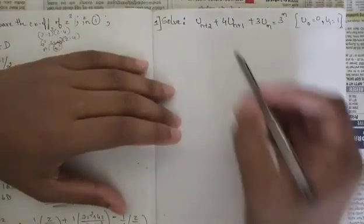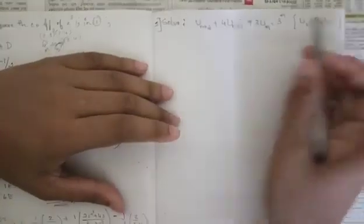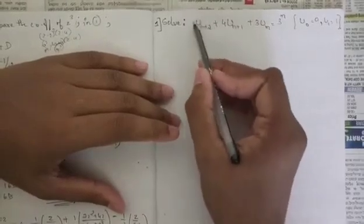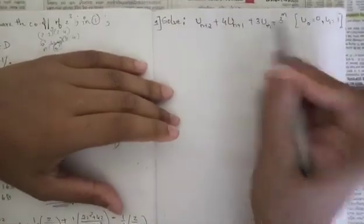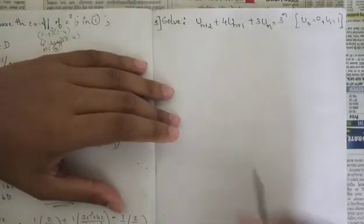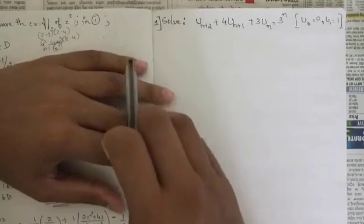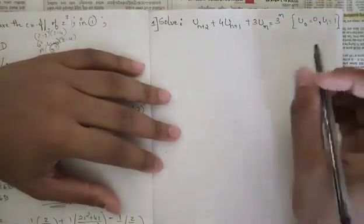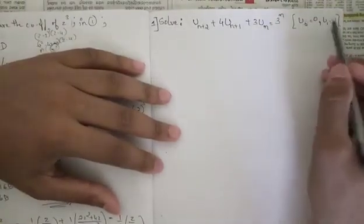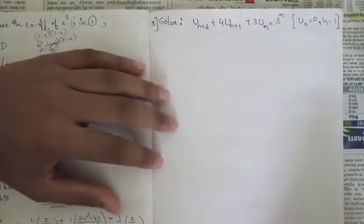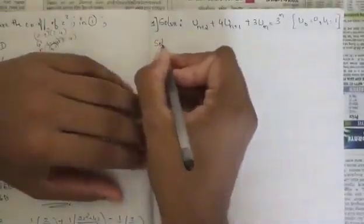We can solve this differential equation. In this case, instead of d/dx terms, we have u(n+2), u(n+1), and u(n). We have written the standard left-shifting property rules for u(n+2) and u(n+1), and we are going to apply and substitute them to solve. The given initial conditions are u₀ = 0 and u₁ = 1.